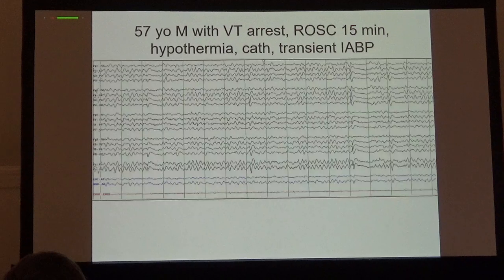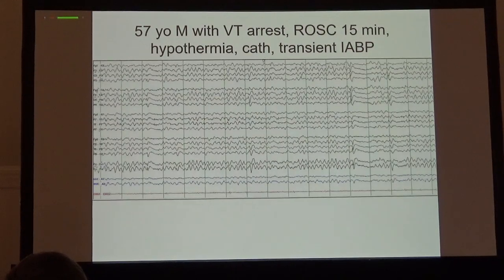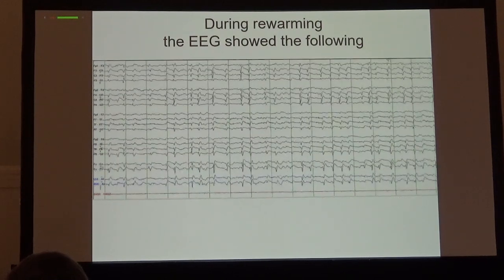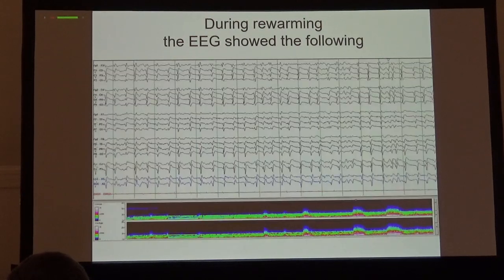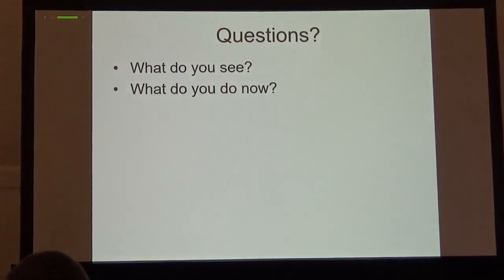Here's a case: a 57-year-old man with VT arrest and cardiac arrest, with a downtime of 15 minutes. He underwent hypothermia, was cathed, and transiently had an intra-aortic balloon pump. During re-warming we saw repetitive generalized periodic discharges that sped up and became more frequent — consistent with the diagnosis of non-convulsive status epilepticus. What do you do now?